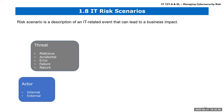A student suggests labeling the box as 'threat category.' The instructor responds that from his government perspective, category relates more to ranking. The student clarifies they see malicious, accidental, error, failure, and natural as attributes or classes of threat — for example, a specific natural threat would be a tornado, tsunami, or earthquake.